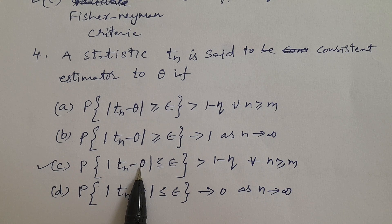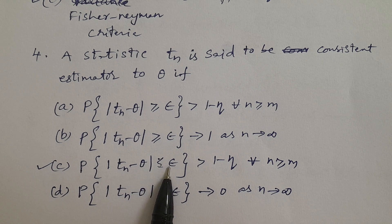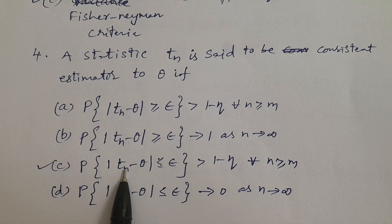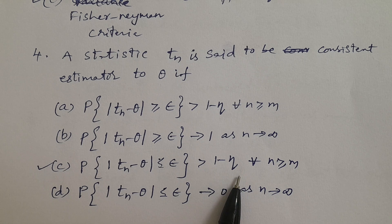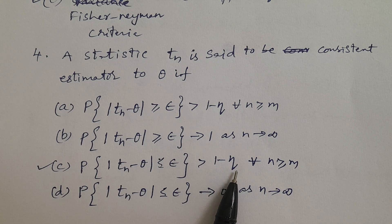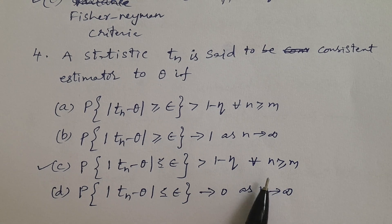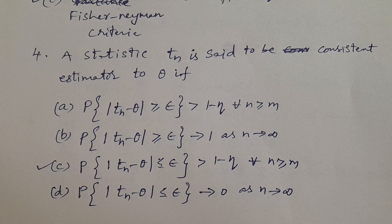ε is a small positive quantity and η is a small positive quantity. So 1 minus something close to 0 gives a probability tending to 1, for all n ≥ M. This is the definition of consistent estimator.